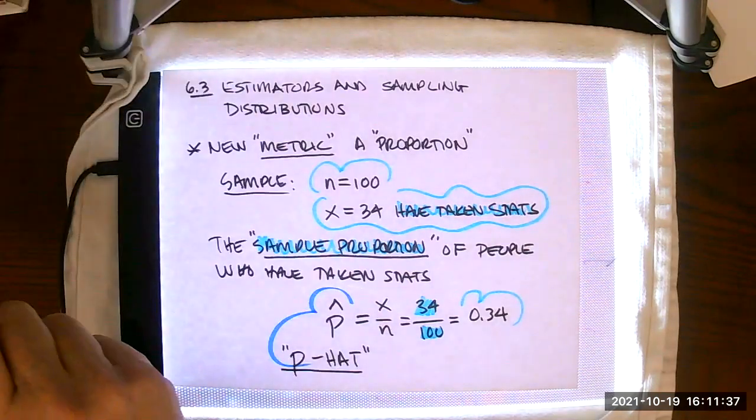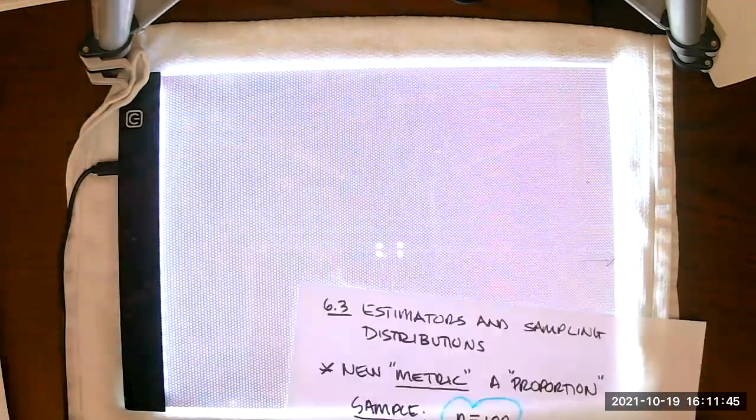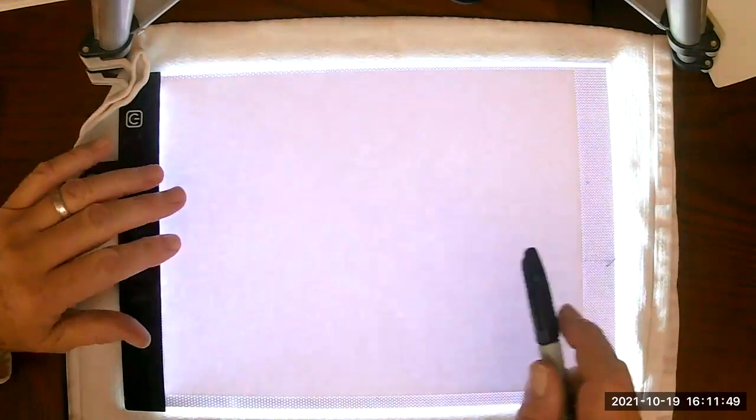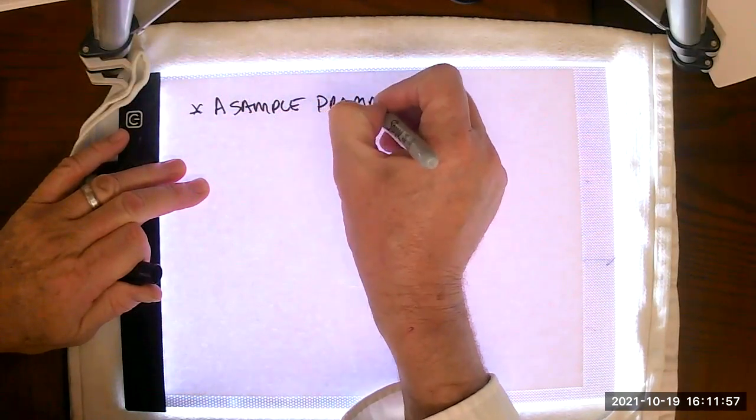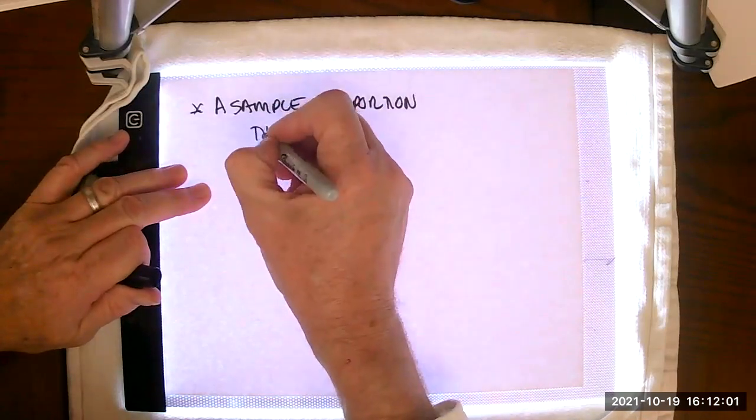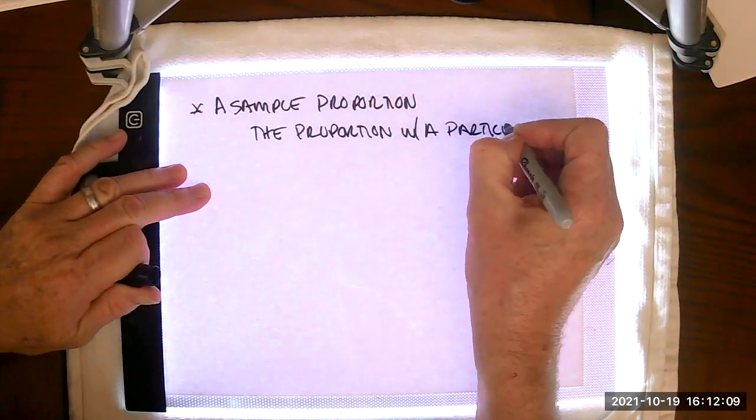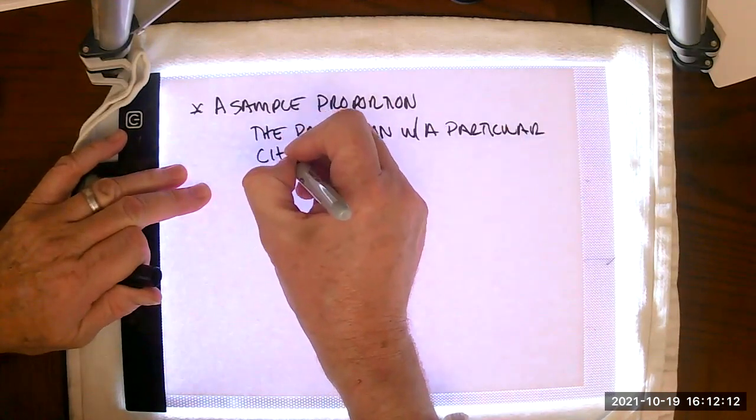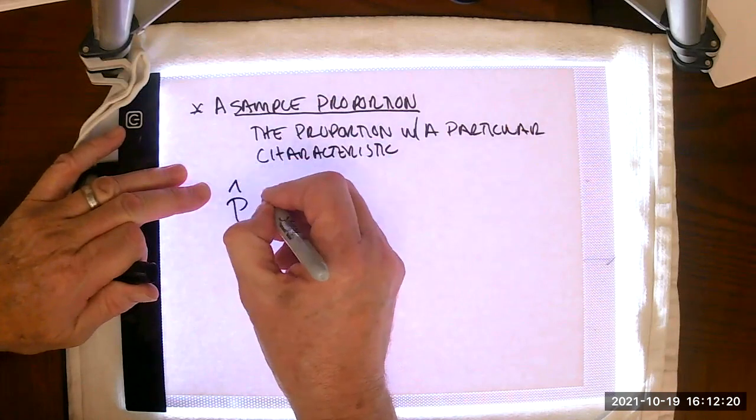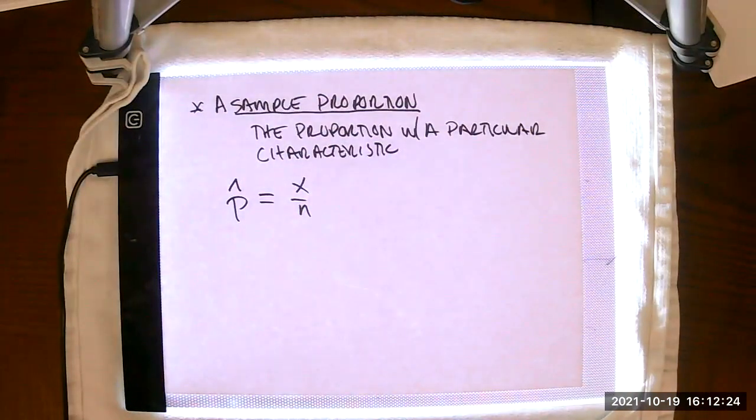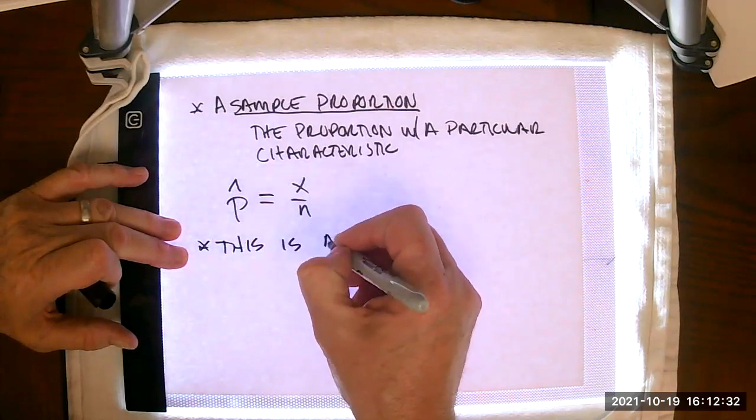So out of that 100, 34 have taken stats, and this is our sample proportion. This thing over here is special notation that we use for a sample proportion. And believe it or not, we call this p hat, because it's p with a hat. So we're going to start to work with sample proportions and population proportions, somewhat similar to a mean or a standard deviation.